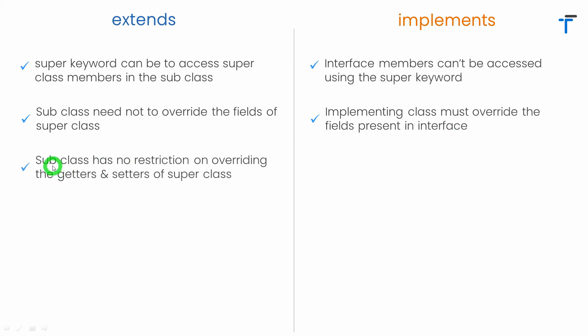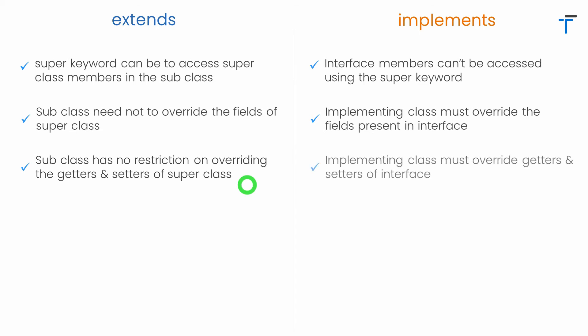A subclass has no restriction on overriding the getters and setters of the super class — it can simply ignore them and reuse the getters and setters of the super class. However, the implementing class must override the getters and setters of the interface. Whatever getters and setters are present in the interface, the implementing class has a responsibility to override them.